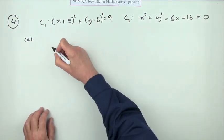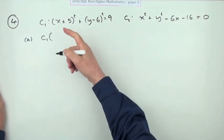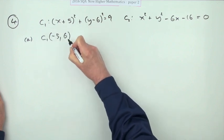So for circle one, I think I'll call the center C1 just to borrow the name. That will simply be negative five and that will be six, and the radius R1 will be the square root of nine which is three.